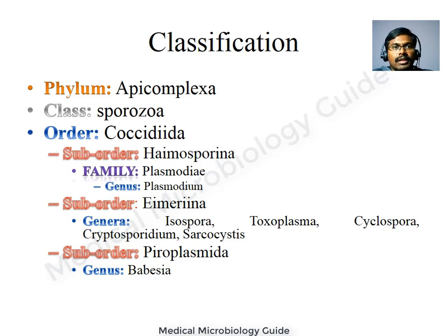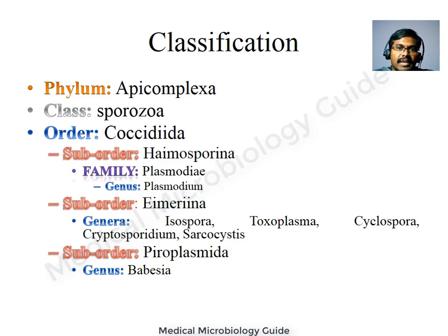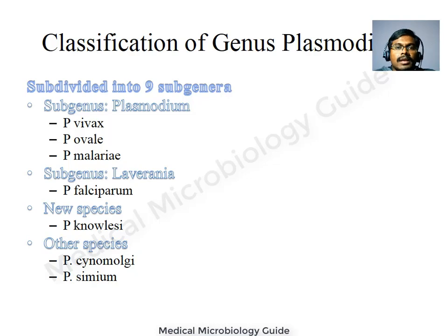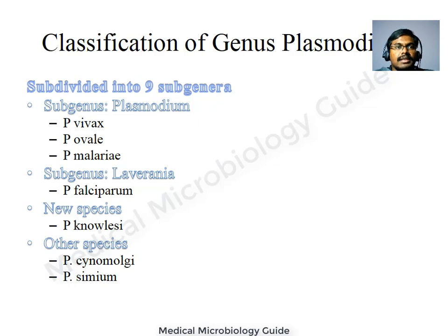The order Coccidida is subdivided into suborder Haemosporina, suborder Haemosporina, and suborder Piroplasmina. The malarial parasites belong to suborder Haemosporina, family Plasmodiidae, genus Plasmodium. The phylum Apicomplexa also has some opportunistic and pathogenic parasites like Isospora, Toxoplasma, Cyclospora, Cryptosporidium, and Babesia.